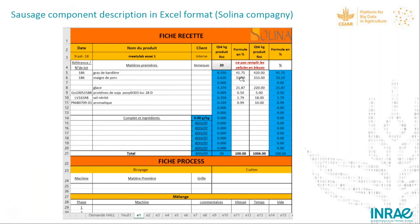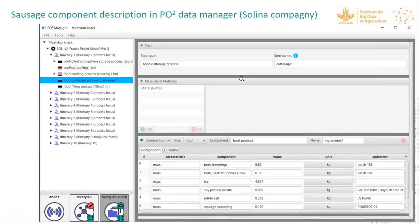In the PO2 data manager, if we click on the food cartridge process operation, we can obtain the table of ingredients in which all the different components are represented using FoodOn concepts plus the associated mass values.